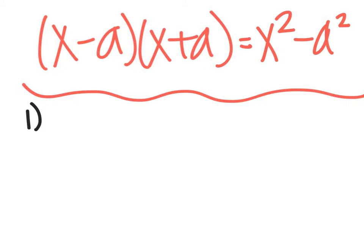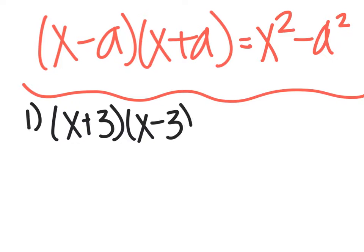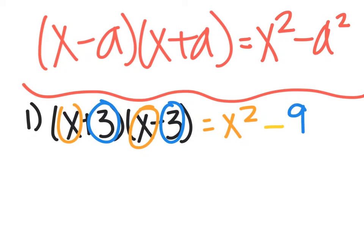For example, if I had (x+3)(x-3), this would be x squared. So it'd be x² minus, because it's always a minus sign, and then whatever a is, which is three. Three squared would be nine, so the answer would be x²-9.